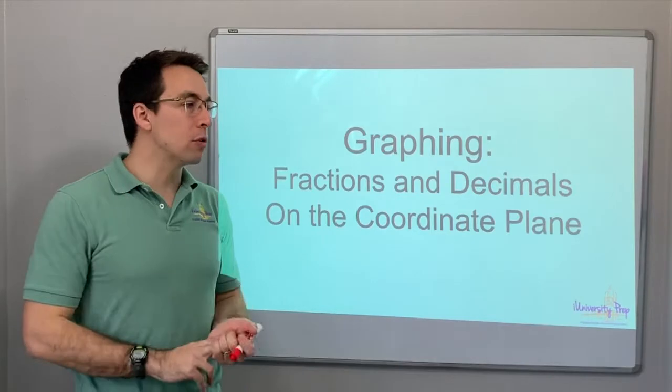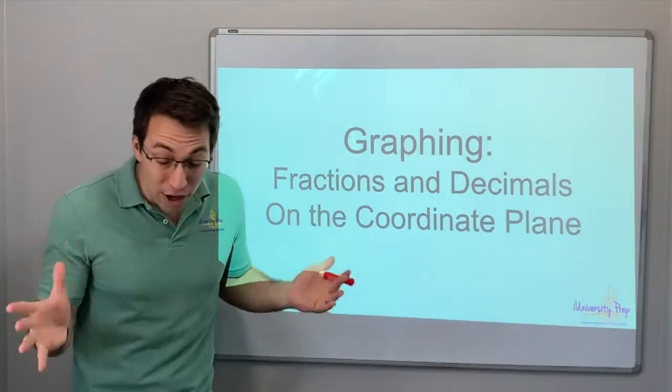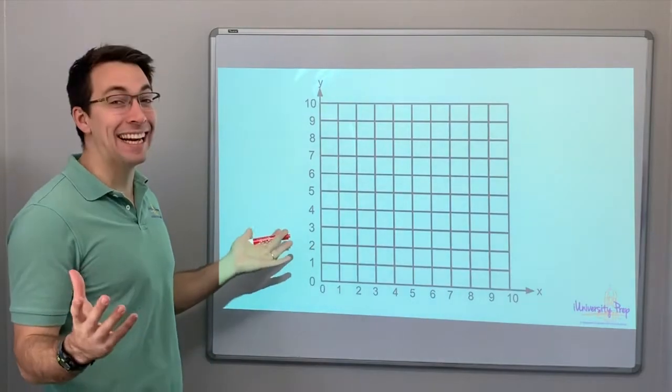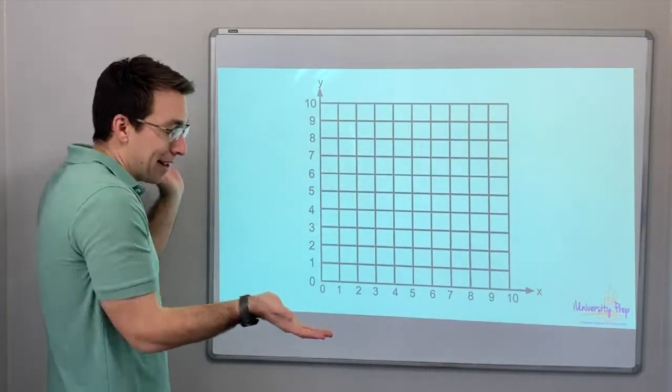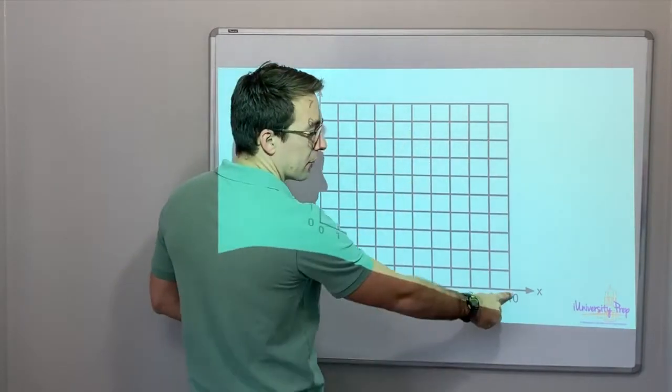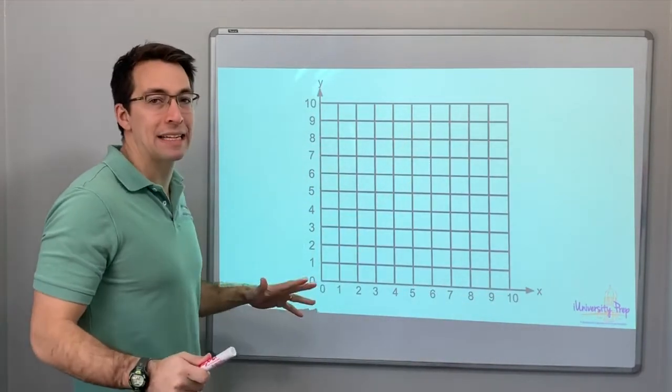So we know how to graph. We know what the coordinate plane is. What if you see a fraction on the coordinate plane? This is a coordinate plane. This is simple, right? This is quadrant one because we have positive on the x-axis, positive numbers on the y-axis.